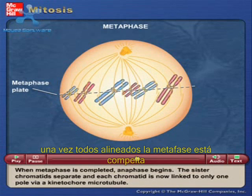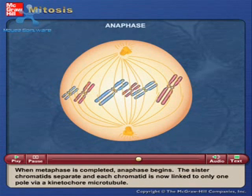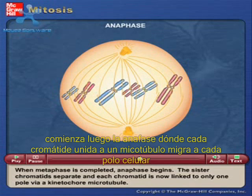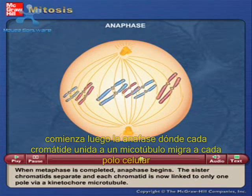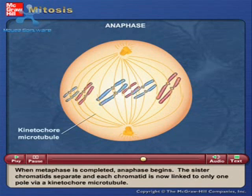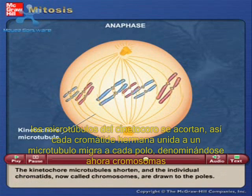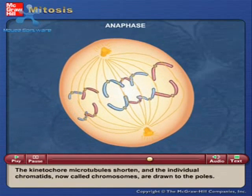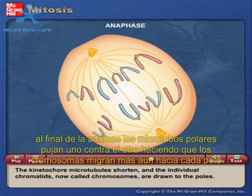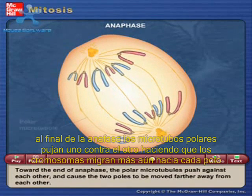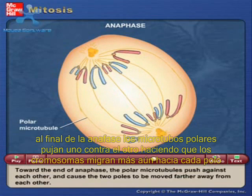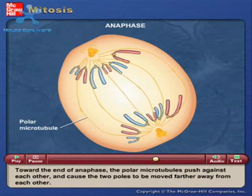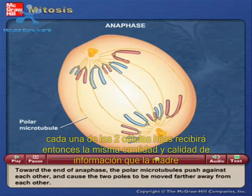When metaphase is completed, anaphase begins. The sister chromatids separate, and each chromatid is now linked to only one pole via a kinetochore microtubule. The kinetochore microtubules shorten, and the individual chromatids, now called chromosomes, are drawn to the poles. Toward the end of anaphase, the polar microtubules push against each other and cause the two poles to be moved farther away from each other.